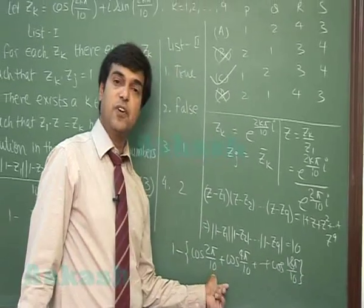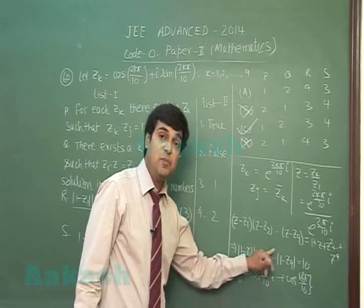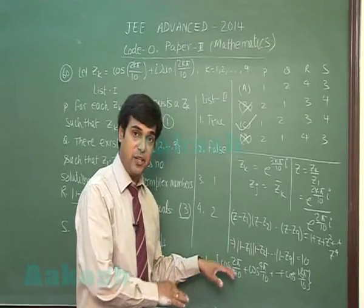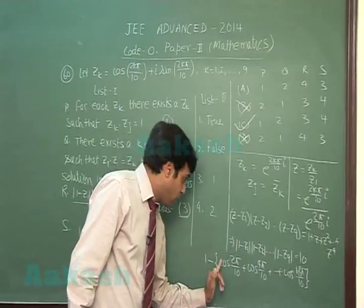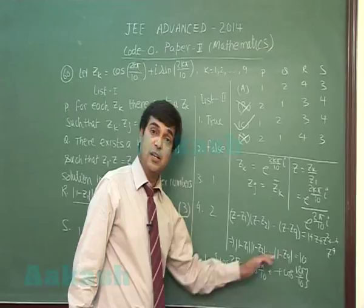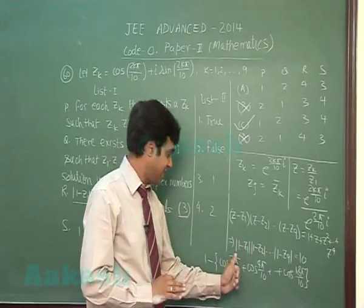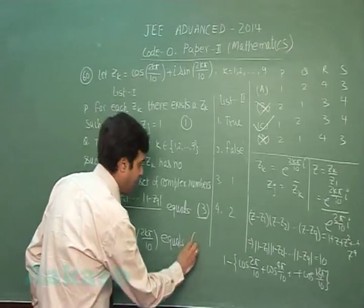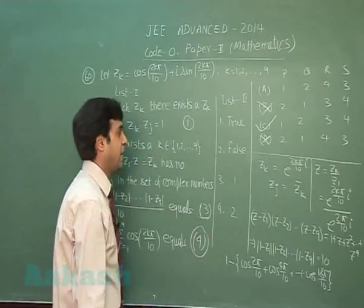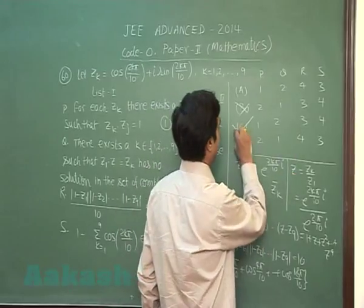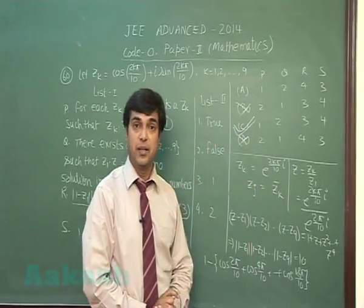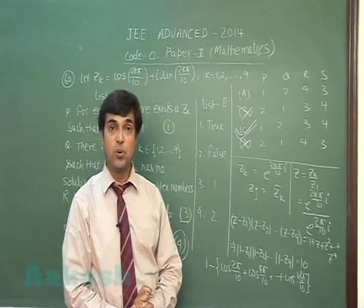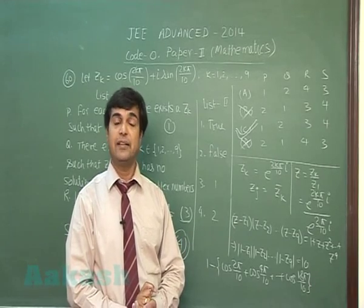Applying the series for summation, that is sine(n beta by 2) upon sine(beta by 2) multiplied with cosine of (first angle plus last angle by 2), where beta is the difference of the angles. We simply obtain the result for the same as 2. That is the fourth one, so 1 minus minus 1. Hence the correct code is C. So this is all for the paper 2 of JEE Advanced 2014. Thank you.